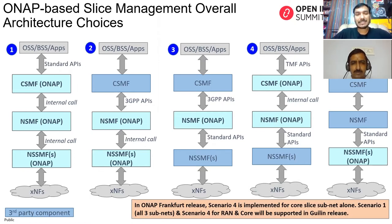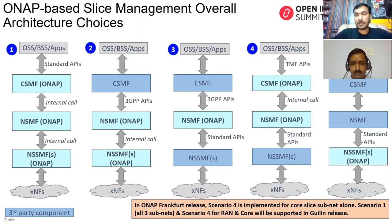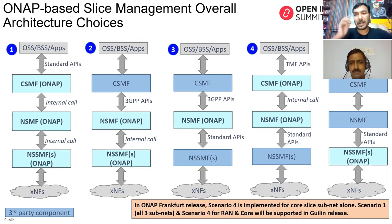The second scenario has the OSS and CSMF from the operator, while NSMF is implemented using ONAP. The third is more restrictive — the MANO part of ONAP is leveraged for 5G slicing management, with federated orchestration handled by an external entity. The fourth scenario has core, transport, and RAN slice management external to ONAP, but CSMF and NSMF done by ONAP. The fifth scenario has only the NSMF done in ONAP.